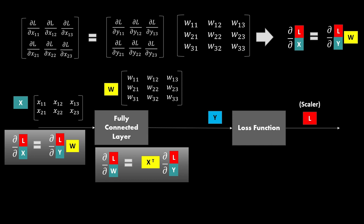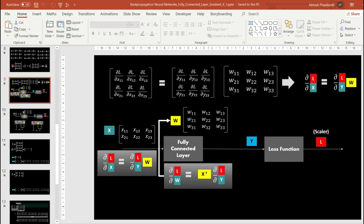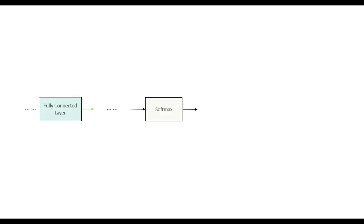Say if you have a fully connected layer, then a softmax layer, and then you are calculating some kind of loss function — for example, cross entropy, where you have true labels that have been one-hot encoded. Let me pull out that example where we have a fully connected layer going to a softmax function. The fully connected layer is giving out some kind of output that is a three-by-three matrix, and that's going through the softmax layer.